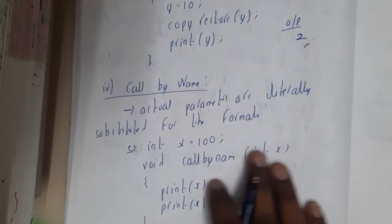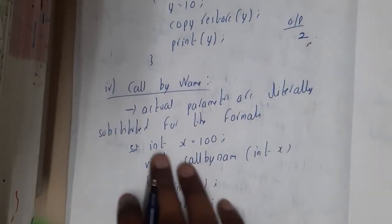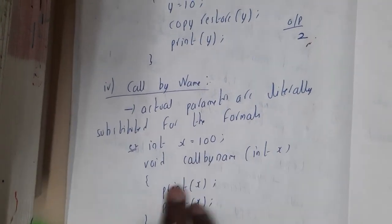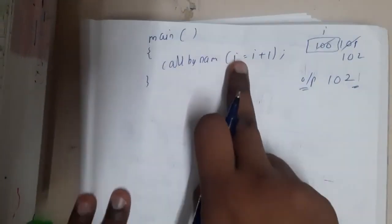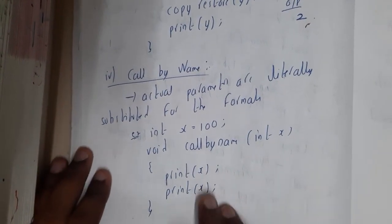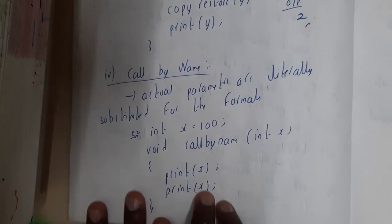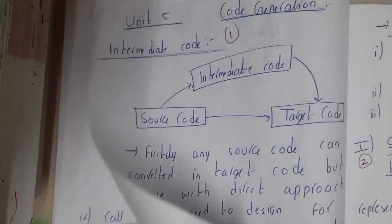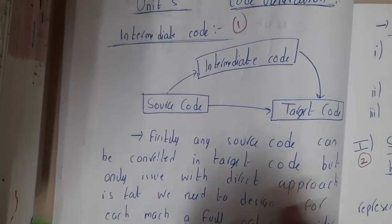In call by name, actual parameters are literally substituted for the formal parameters. For example: int x = 0; void callByName(int x) { print x; print x; } where x is substituted with the expression i = i + 1. If the initial value of i is 100, then after the first printf it becomes 101, and after the second printf it becomes 102. So you end up getting outputs 101 and 102.